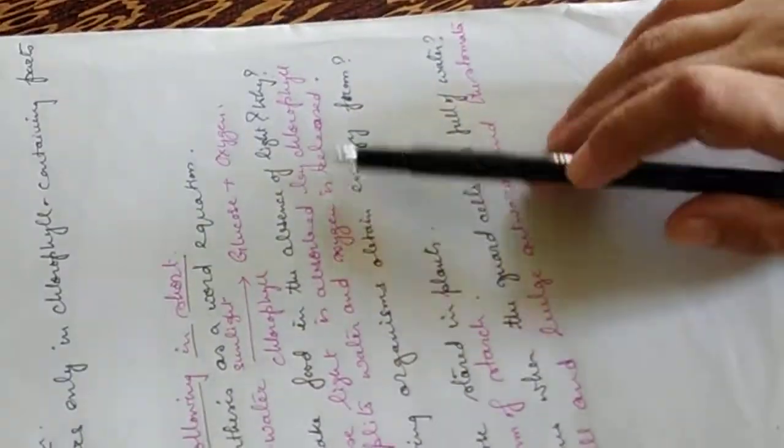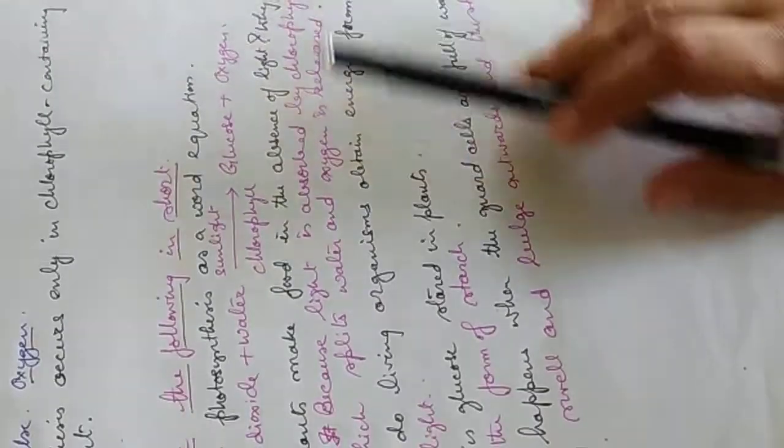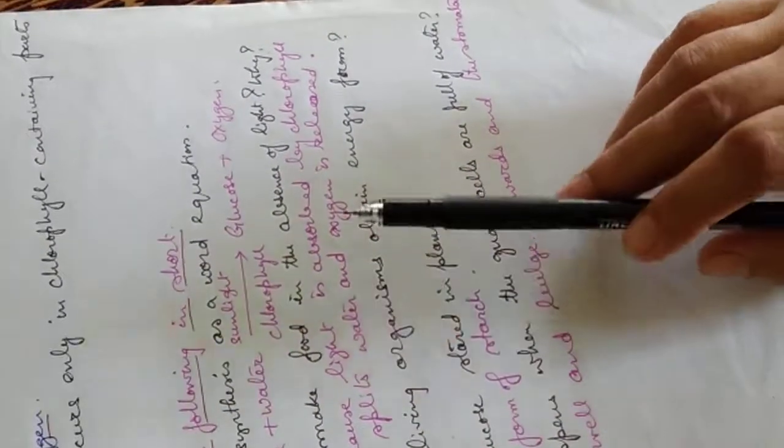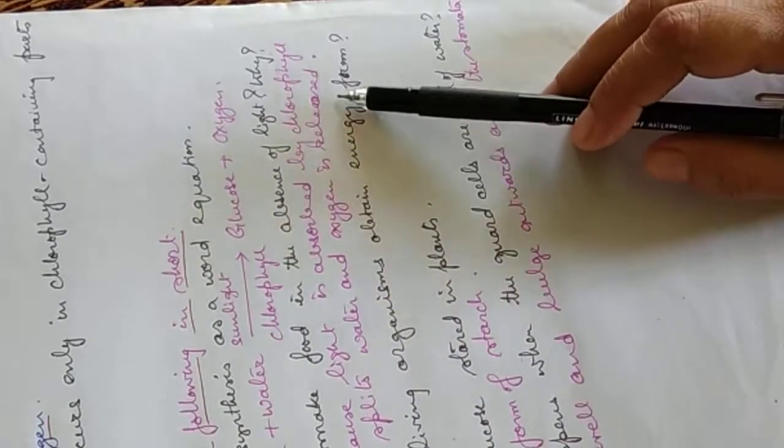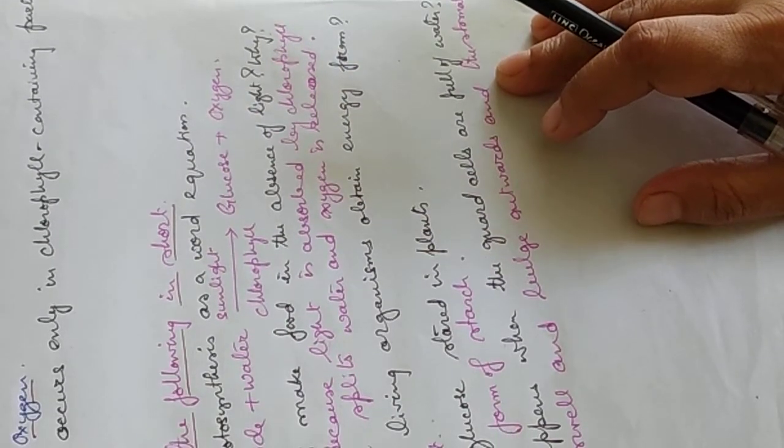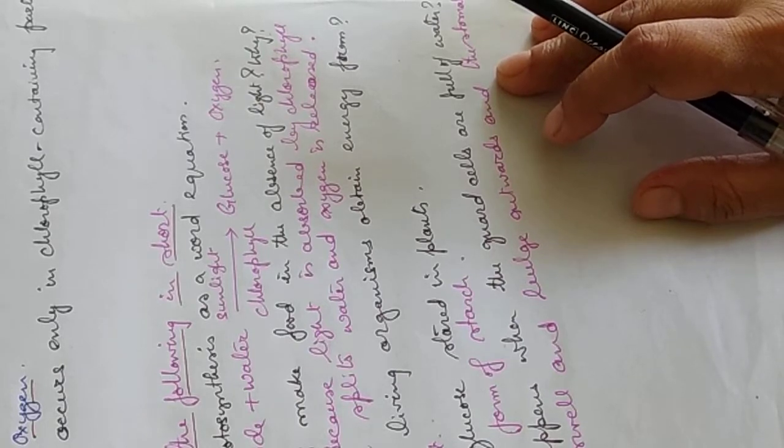Can plants make food in the absence of light? Why? It's because they cannot make their own food. It's because light is absorbed by the chlorophyll, which splits water and oxygen is released. So light is required for the photosynthesis process, which is absorbed by the chlorophyll. And it splits the water molecule, that is H2O molecule.